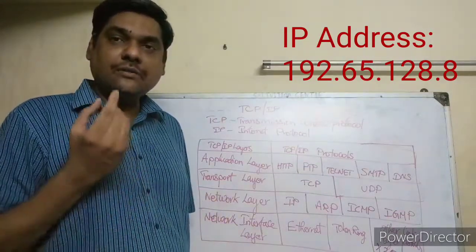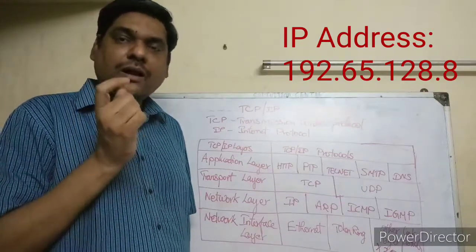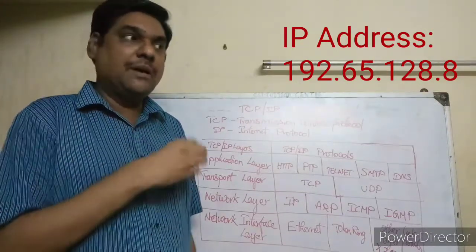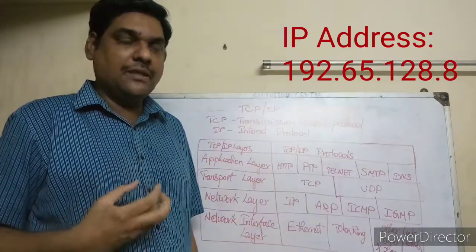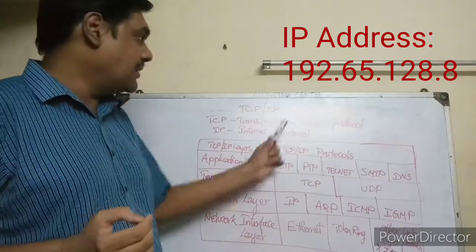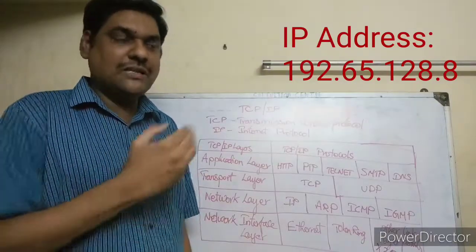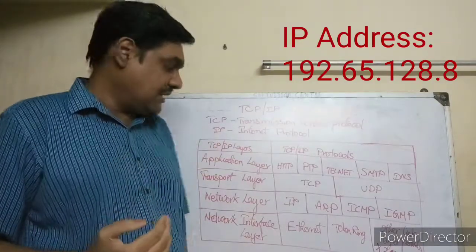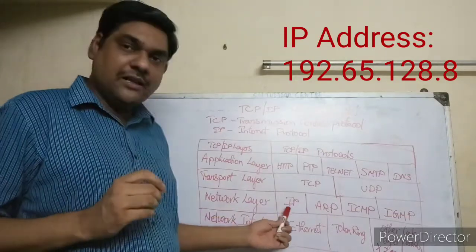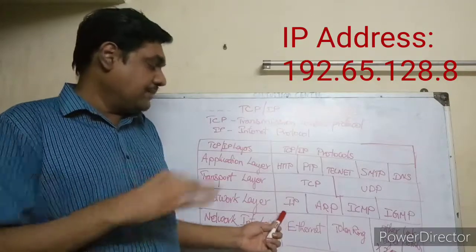In a network, every computer has a unique address — a unique number — just like a house number. Each computer is assigned a number, and that number is called its IP address. The destination IP address is attached to each packet; that is the Internet Protocol.